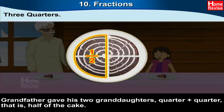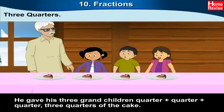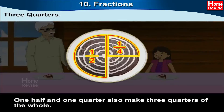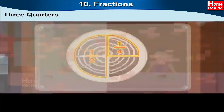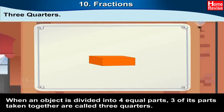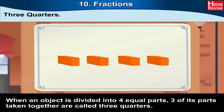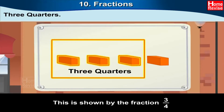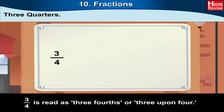Grandfather gave his two granddaughters quarter plus quarter, that is half of the cake. He gave his three grandchildren quarter plus quarter plus quarter, that is three quarters of the cake. One half and one quarter also make three quarters of the whole. When an object is divided into four equal parts, three of its parts taken together are three quarters.